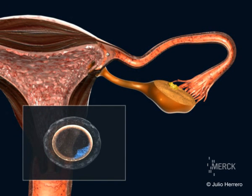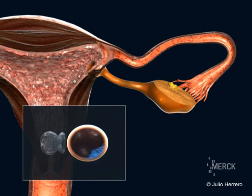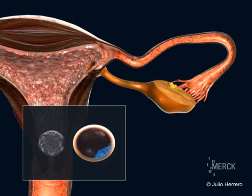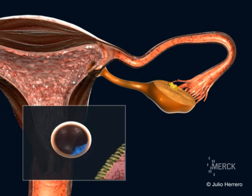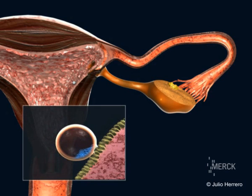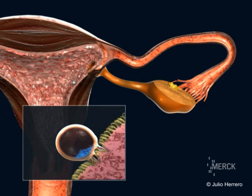The blastocyst migrates to the uterus and sheds the surrounding membrane in a process called hatching, and the embryo begins to implant in the endometrium of the uterus.